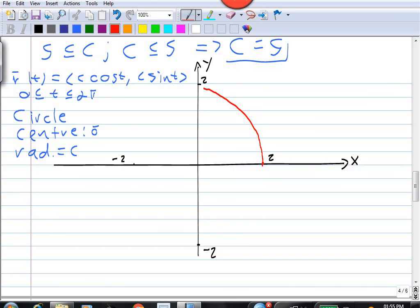down, and all the way around. So, this is the curve parametrized by our vector function r.